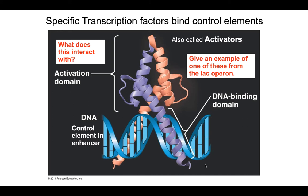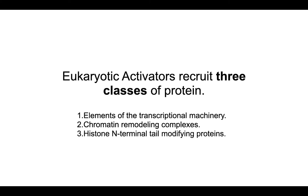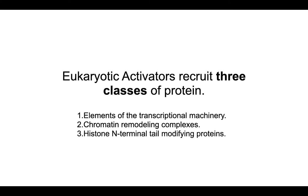And then we have the activation domain. In prokaryotes, oftentimes the activation domain of a specific transcription factor directly interacts with RNA polymerase. That is not the case for eukaryotes. For eukaryotes, the activation domain of specific transcription factors binds to all kinds of other things that will indirectly help RNA polymerase bind to the promoter. So, what are some of the things that eukaryotic activators bind to if it's not RNA polymerase directly?